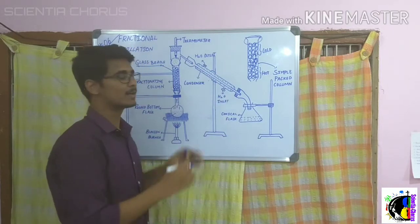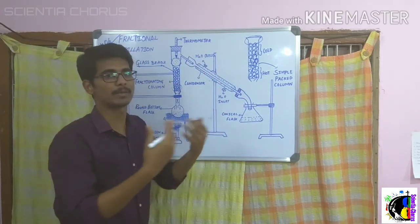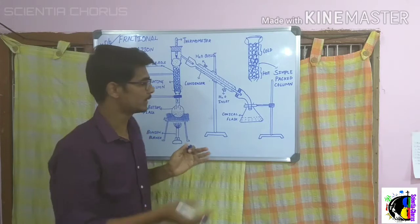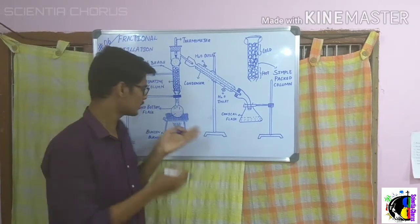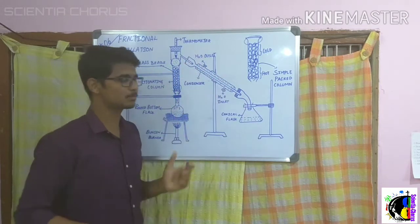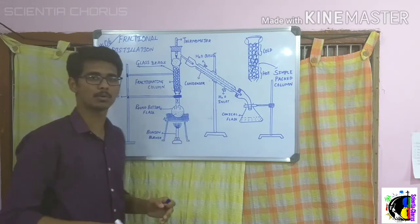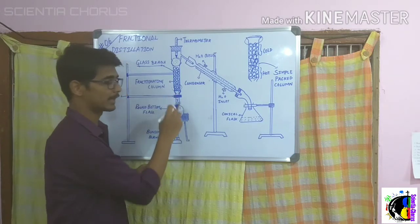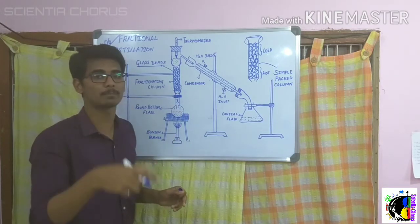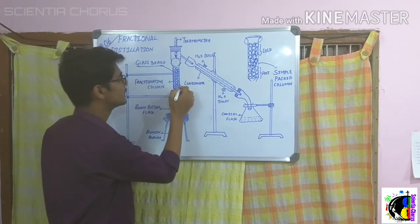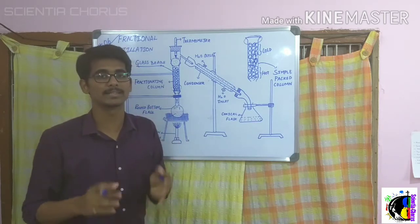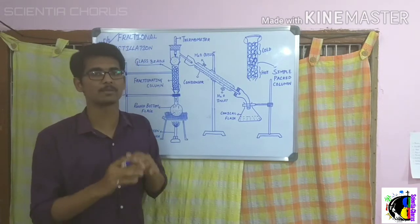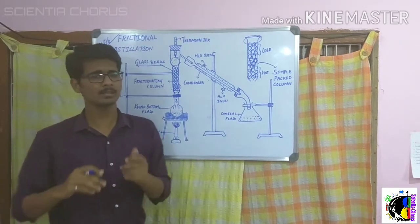The ethanol vapor then reaches the condenser where cold water is present, providing a cold temperature. Condensation takes place and all the ethanol vapors condense back to liquid, which is collected in the conical flask. Regarding water: when it reaches 100 degrees Celsius it also vaporizes, but since water has a high boiling point, its vapors condense very fast within the fractionating column region itself and fall back into the round bottom flask. This is how we separate water and ethanol.